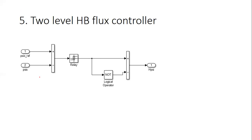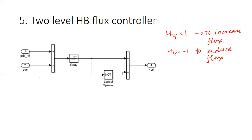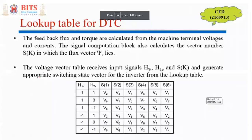The two-level hysteresis flux controller compares the flux reference with actual flux. If the difference exceeds a particular band, the output is set to +1; otherwise it is -1. These are the two status signals for the flux control loop.